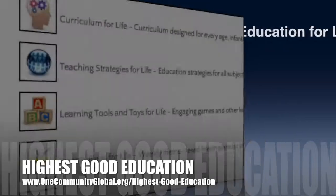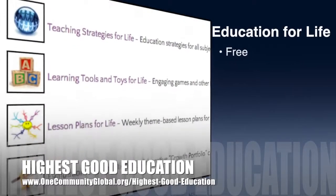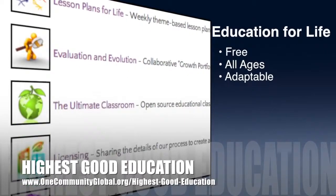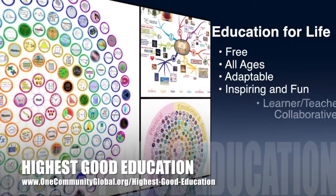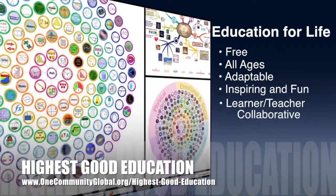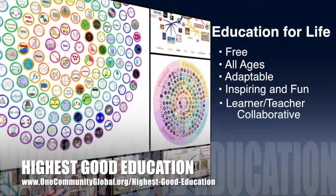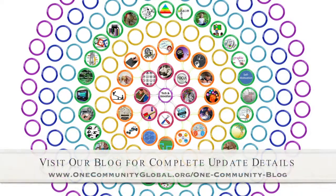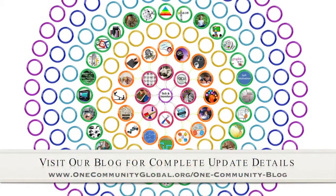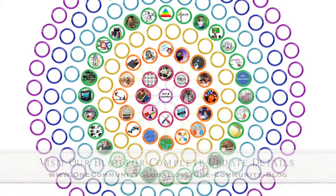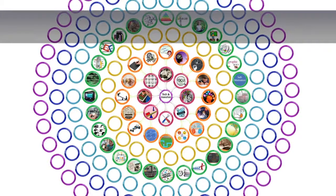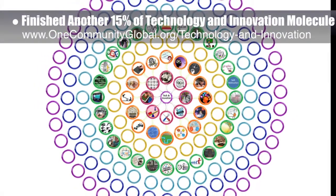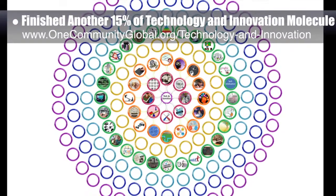OneCommunity's approach to highest good education is open source and free shared, designed for all age groups, adaptable to any schooling environment, inspiring and fun for all participants, a learner-teacher collaborative, and it includes U.S. Common Core standards. This week, the core team — which includes the Pioneer and Satellite members, plus those helping who don't wish to be individually acknowledged — finished another 15% of the technology and innovation molecule graphic, which you can see here.